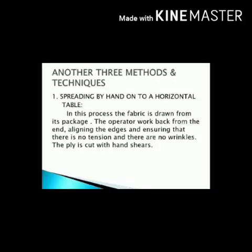Next are three more methods and techniques. First: spreading by hand onto a horizontal table. In this process, the fabric is drawn from its package. The operator works back from the end, aligning the edges and ensuring that there is no tension and no wrinkles. The ply is cut with hand shears — shears means kaanchi. The operator works by hand, edges are placed on a line, and layers of cloth are cut using hand shears.